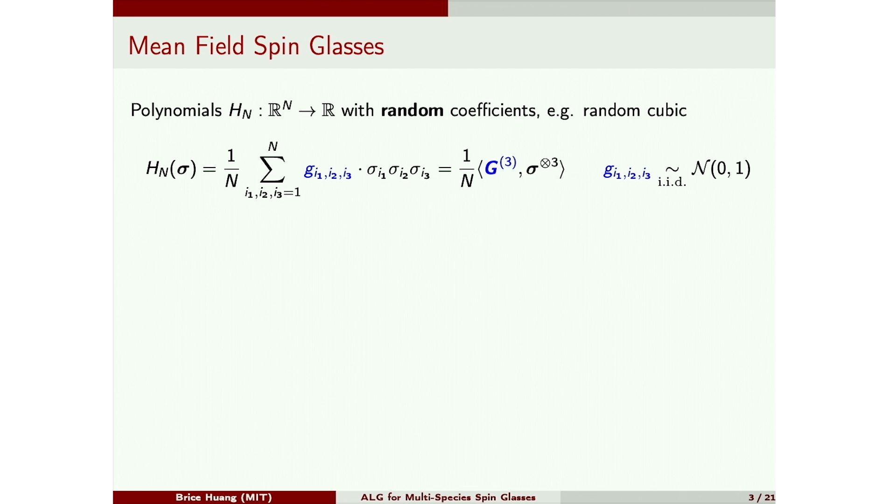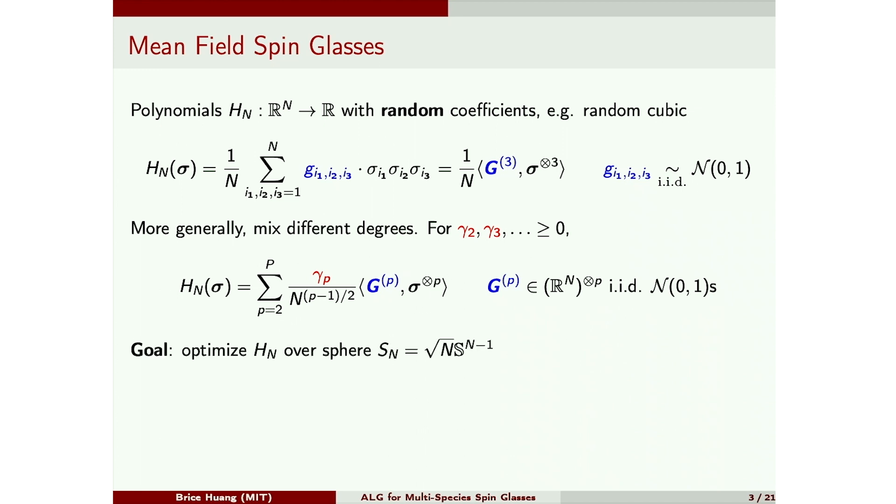More generally, we can take linear combinations of this construction over different degrees. So for every degree P, you do this construction. Then these numerators are constants that determine the relative weights of different degrees. And these denominators simply normalize different degrees to contribute on the same scale. So that's your random polynomial. And our goal will be to optimize this polynomial over a sphere of radius root n.